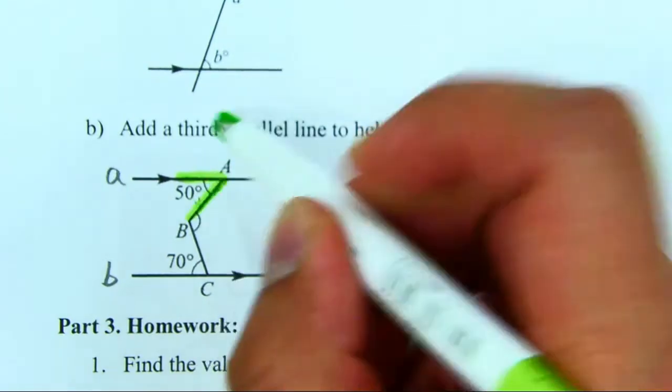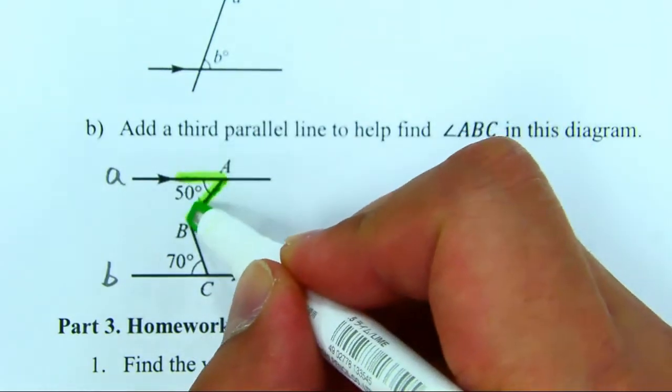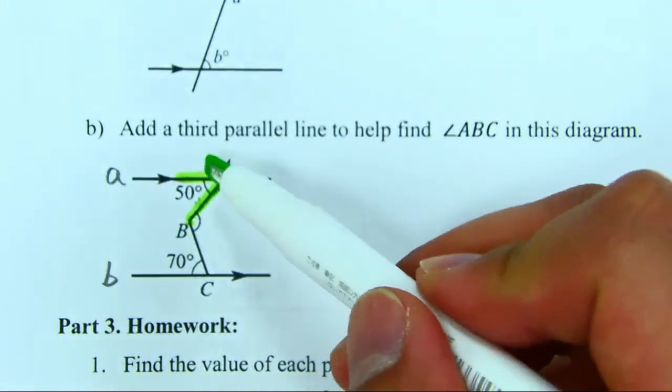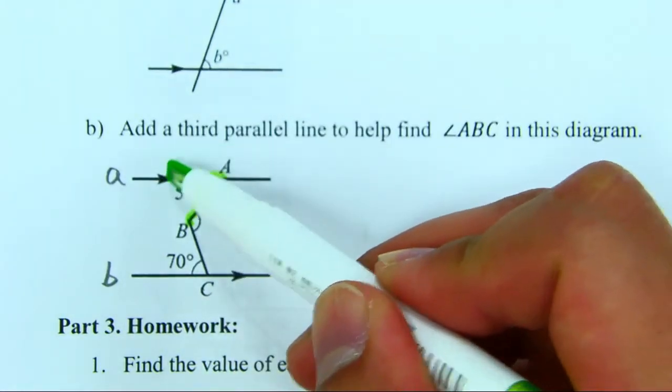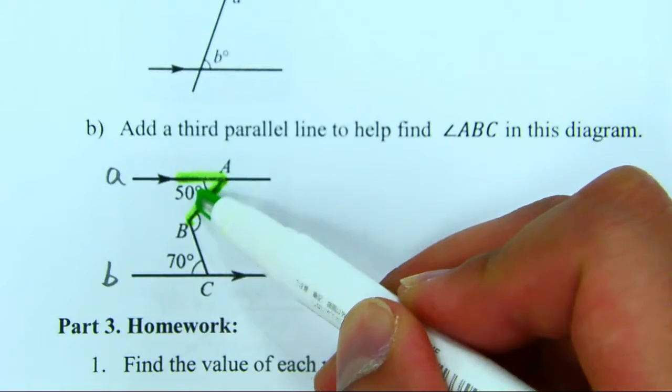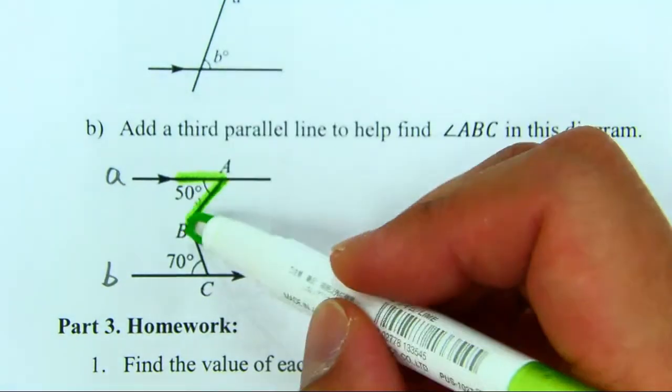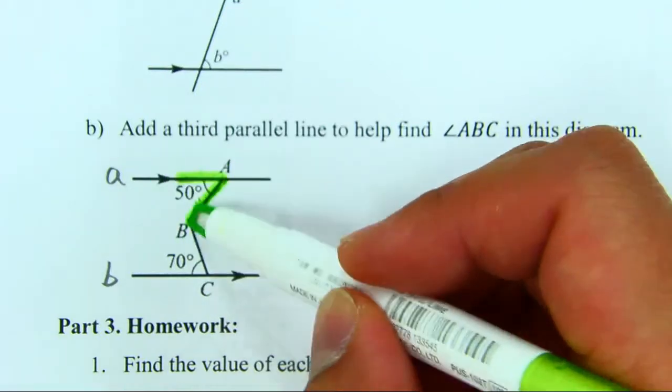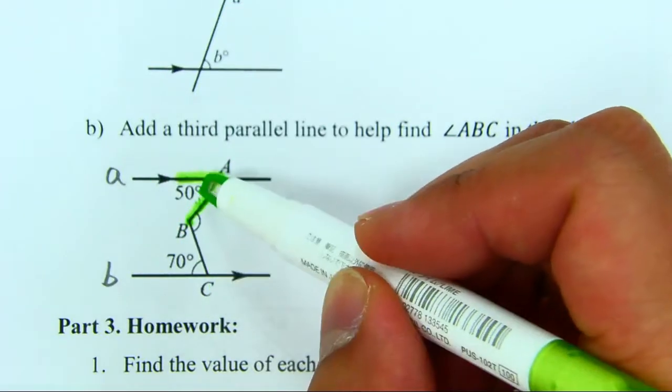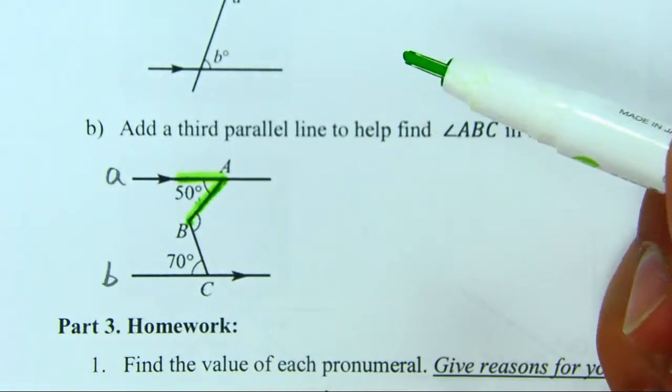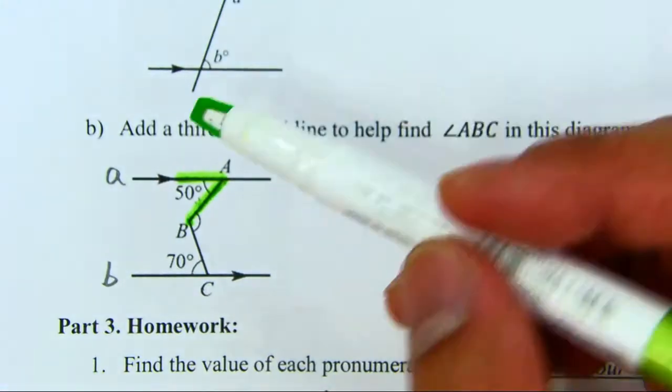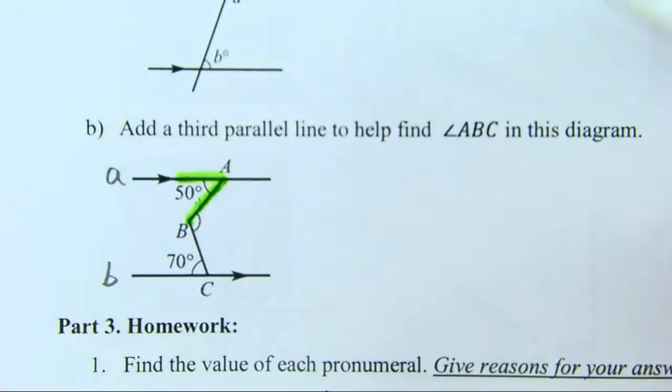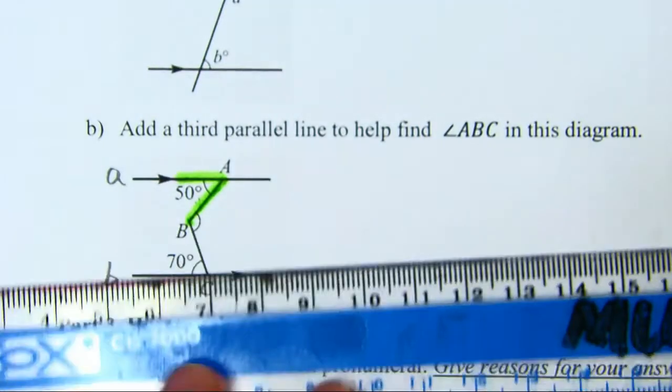If I draw the angle like that, we can see angle 50, this 50 degree angle, and angle ABC are alternate angles. But if I want to prove they are equal, we have to find parallel lines. Here you don't have parallel lines, so in this case I can draw a parallel line.